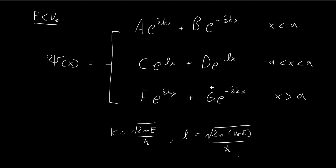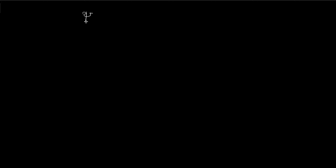This is where we left off in the last video. We've derived the expression for ξ(x). Our ultimate goal is to find the transmission coefficient for a particle coming from the left to the right. And in order to find the transmission coefficient, we need to find the values of these constants, which we can do by exploiting the continuity restrictions required for ξ(x).